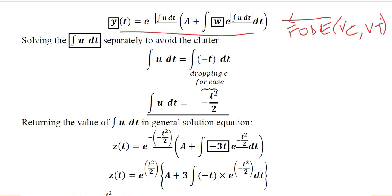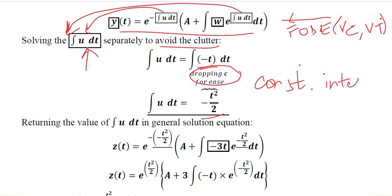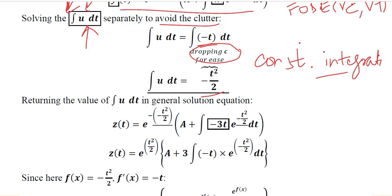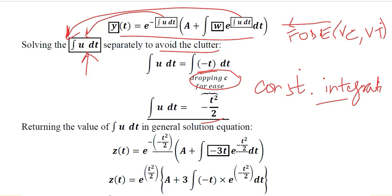The formula will be used accordingly. This is the case where the first order differential equation is used and solved with variable coefficient and variable term. This is the formula from our previous knowledge. Now we try to solve u integral separately to avoid clutter. The value of u is substituted here, it was equal to minus t. When we integrated it, we got this answer, but we also got rid of the constant of integration to keep the process simple. Now we are going to put it in this formula.